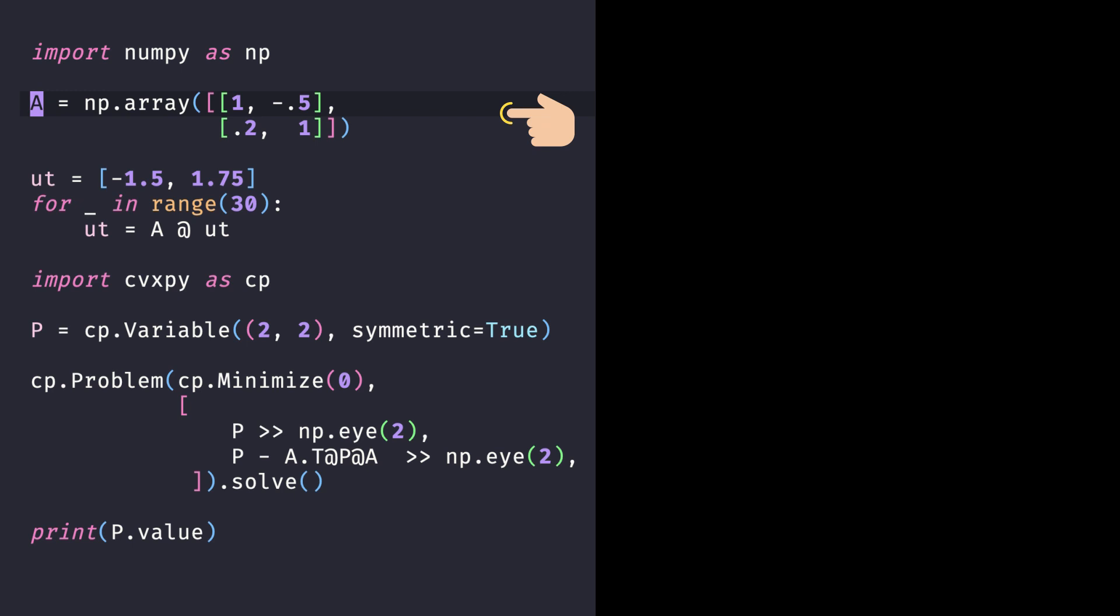If you run the exact same code with a different matrix A, like this one for example, the solver will tell you that the semi-definite program is infeasible, which shows that the corresponding dynamical system is not stable. And this is something you might have guessed by looking at this sample trajectory for example.